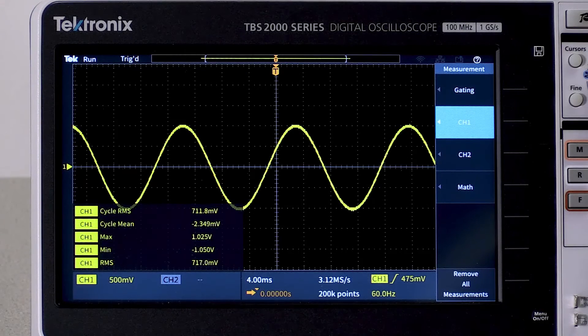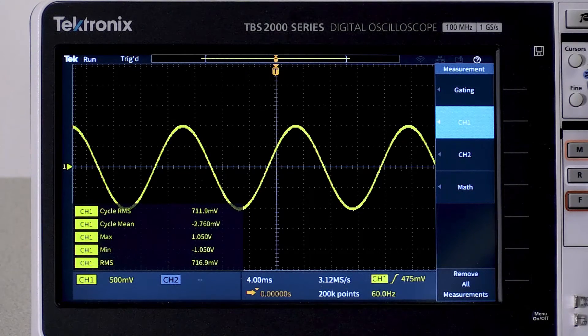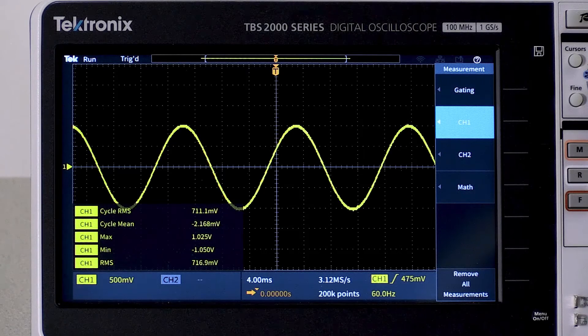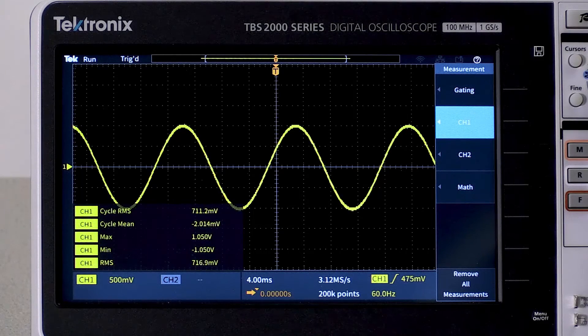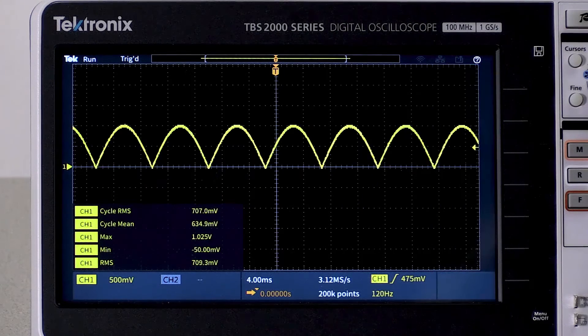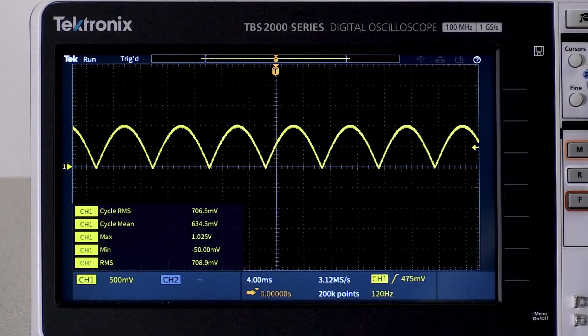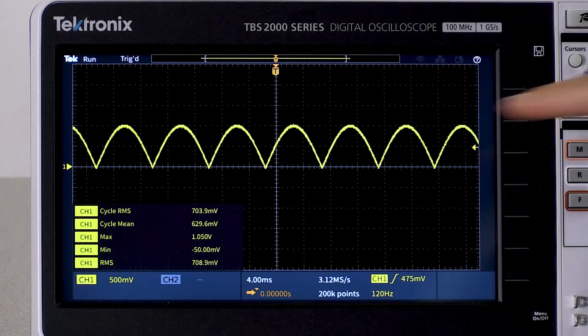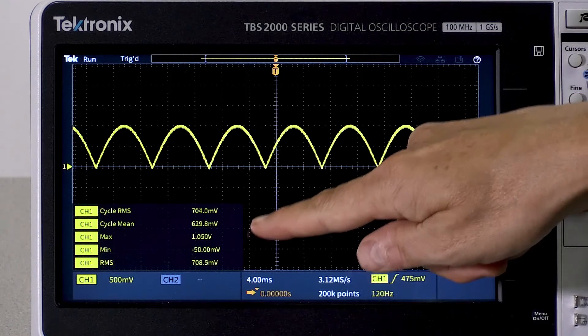I'll switch back to sine on my function generator. And as I mentioned earlier, the RMS value is independent of signal polarity. Let's prove it to ourselves by feeding a rectified version of this sine wave into the scope. Even after full wave rectifying the sine wave, the RMS value stays at 71% of the max.